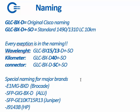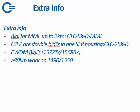Special naming for other brands: for Brocade, we have them coded and labeled in our stock as E1MG-BXD. For Octalucent, it's the SFP-GIG-BXD. Juniper and HP have their own names as well.